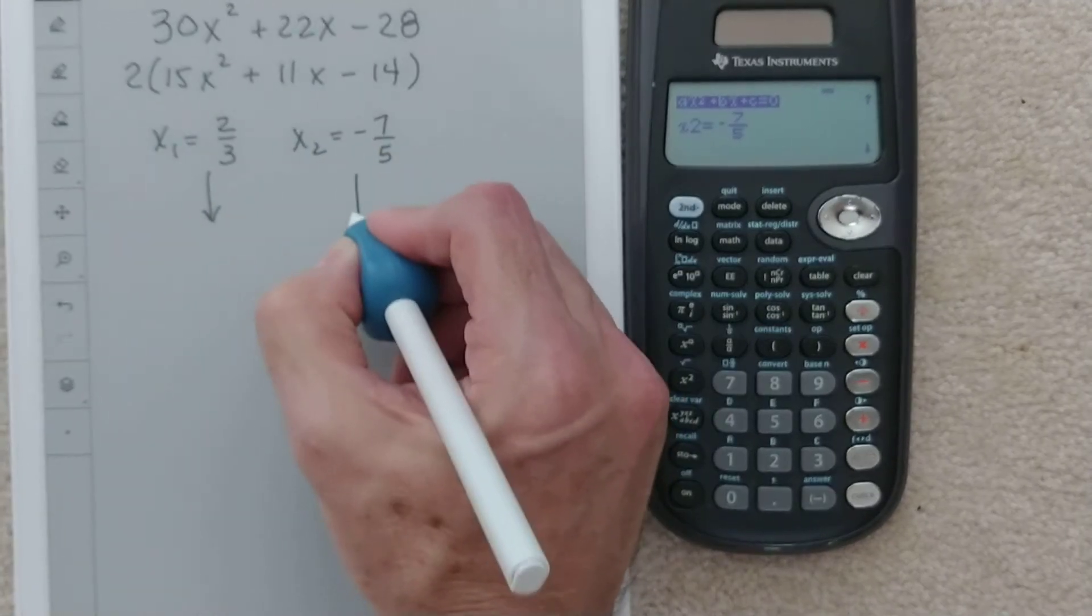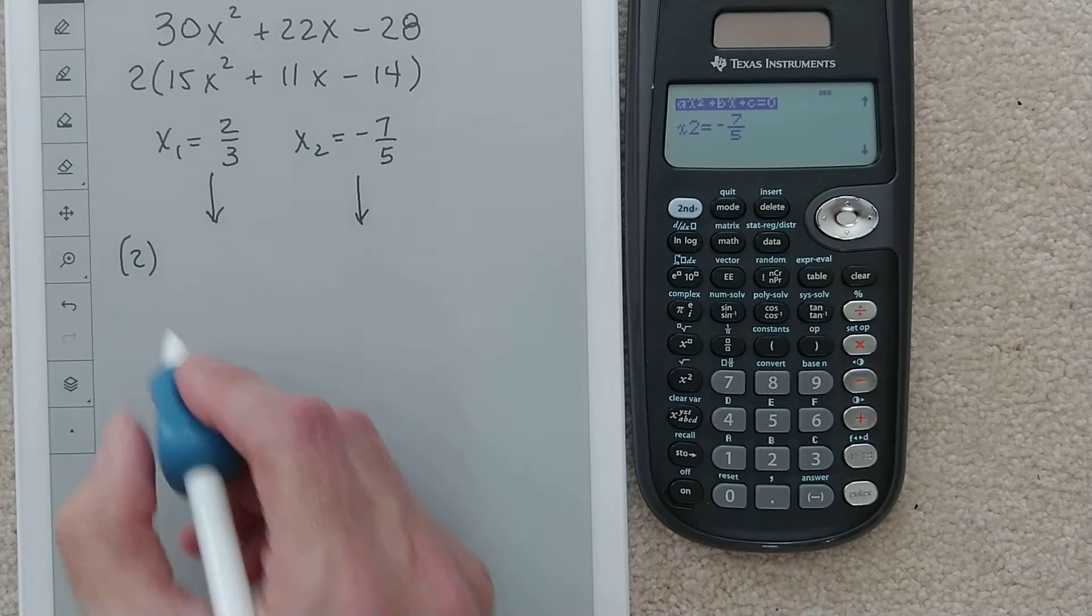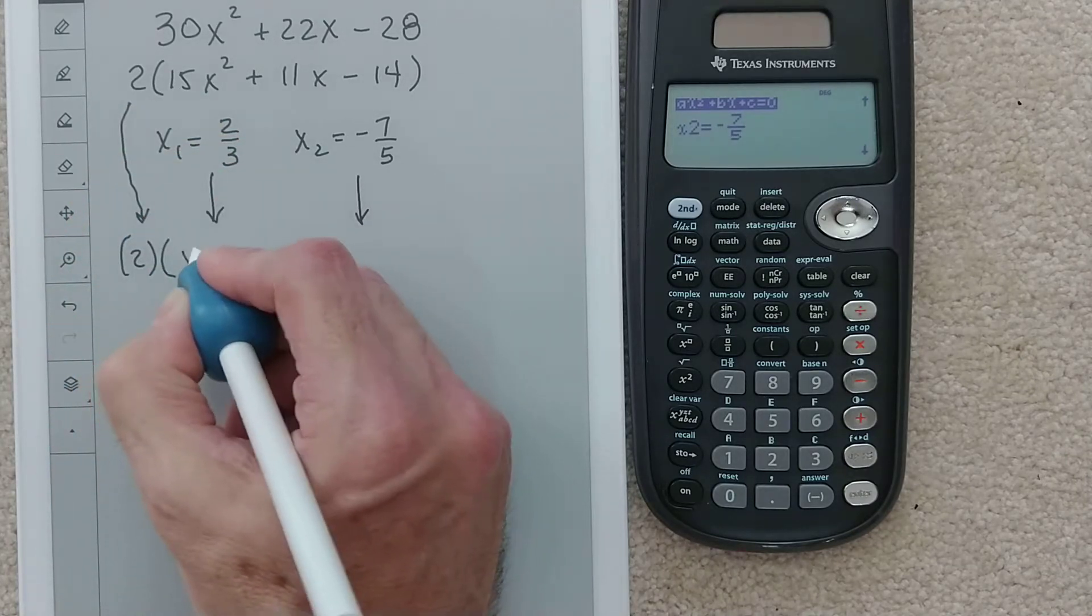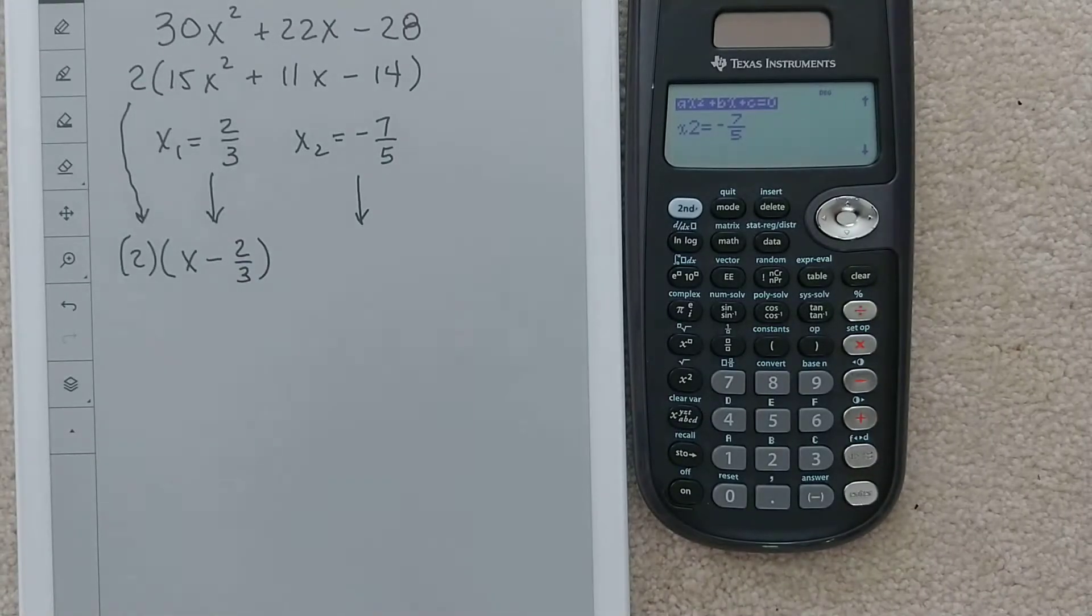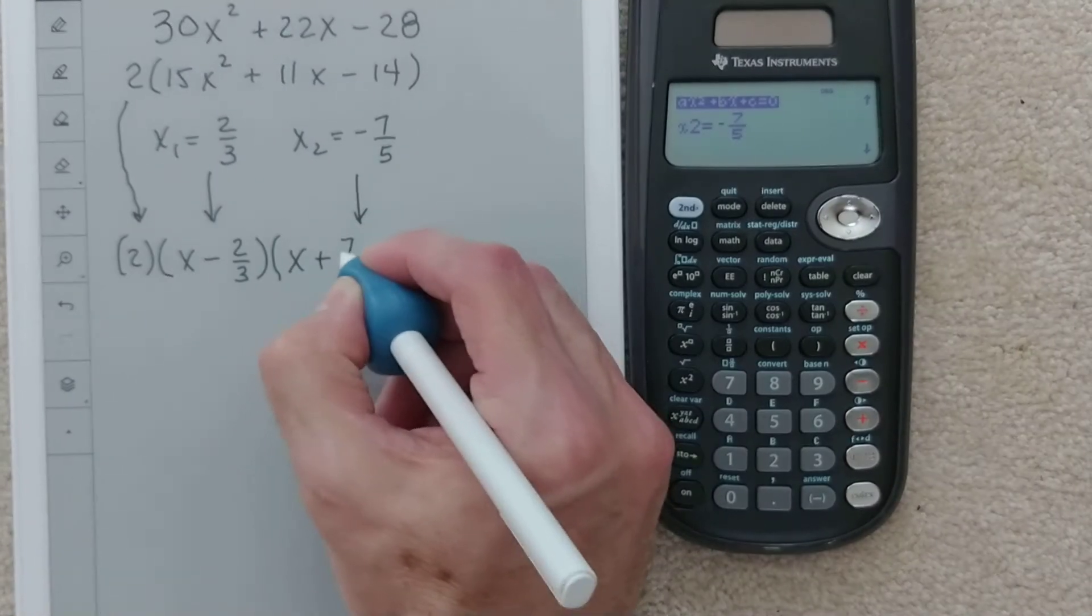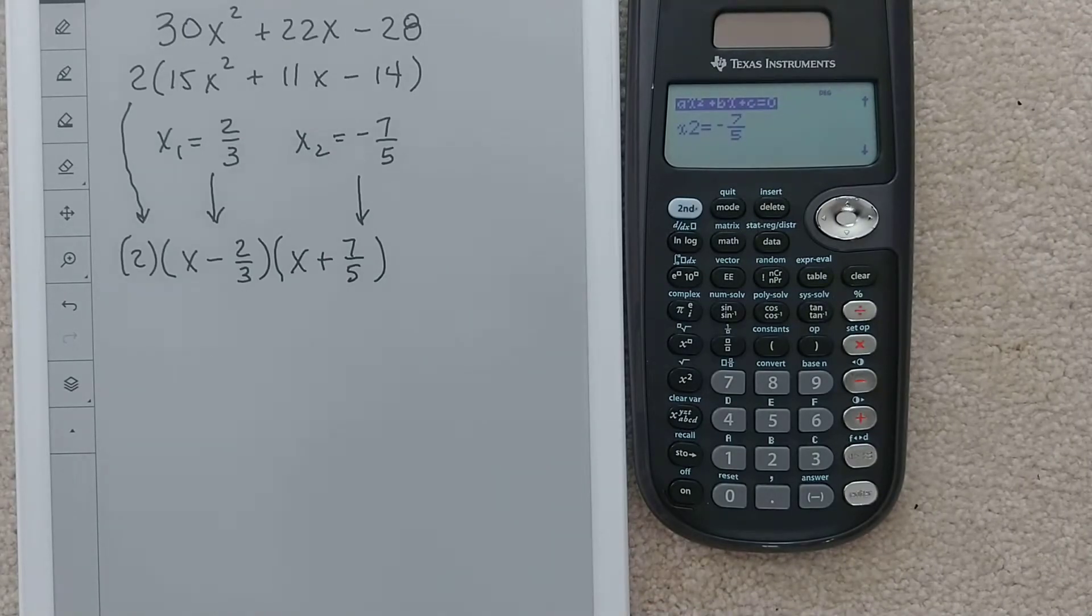Now if I want to find the factors, the first step is exactly what we did last time. We still have this 2 out front that we factored out earlier. Then we do x minus 2/3 - we always flip the signs when doing factors. Then here we have x plus 7/5, so it was negative 7/5 as the root, so the factor is x plus 7/5.